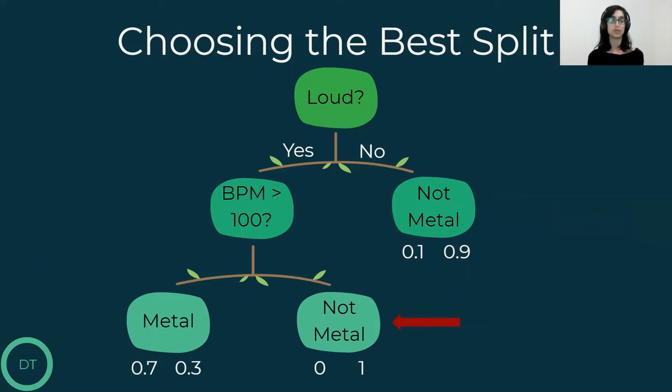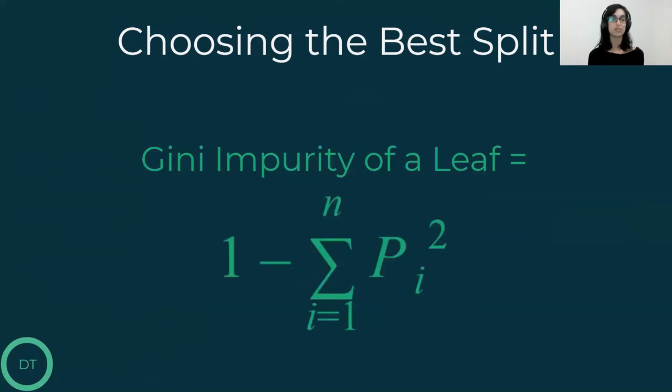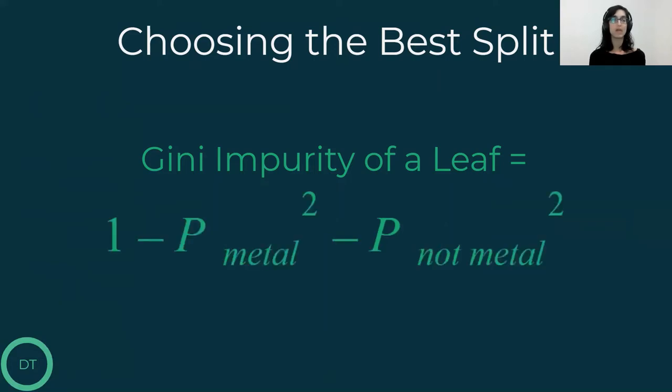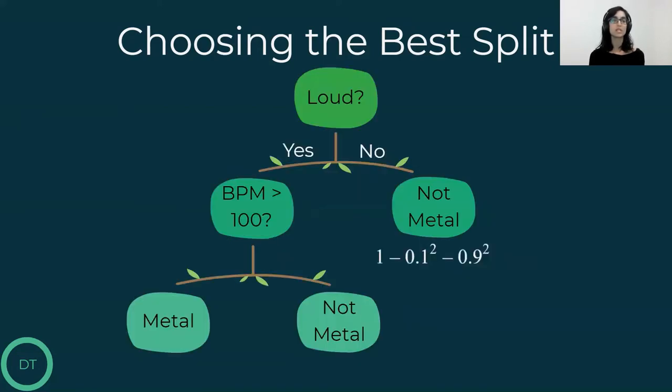There are many ways to measure impurity. A common one is called Gini. In classification problems, the Gini impurity of a leaf is calculated using the probabilities of a sample that reach that leaf to be in each class. In our case, the Gini impurity of a leaf is 1 minus the probability of being a metal song, squared, minus the probability of not being a metal song, squared. So we can calculate the Gini impurity for each leaf node. Trust me, I've calculated it for you. These are the numbers we get.